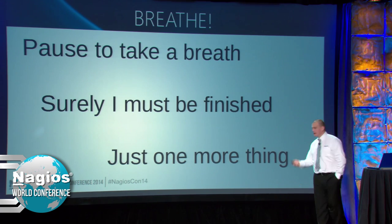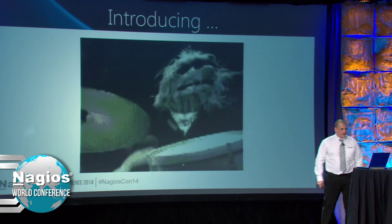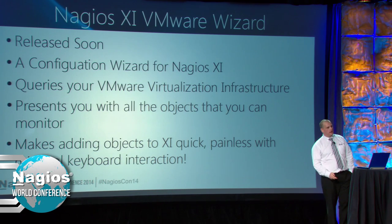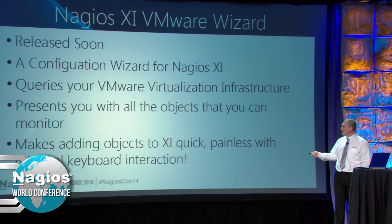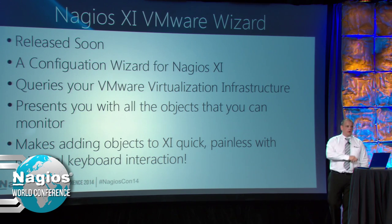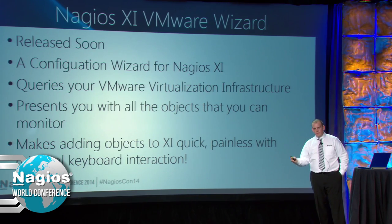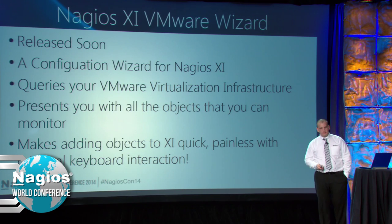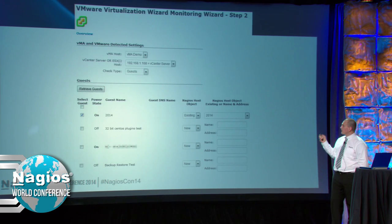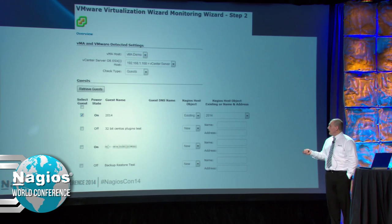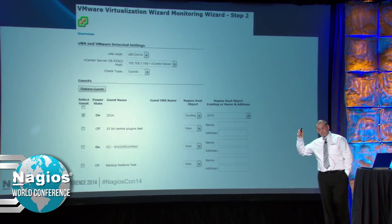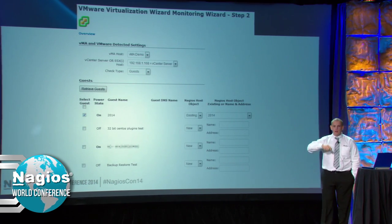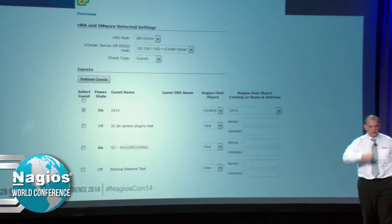I think I've covered everything but there's just one more thing - introducing a wizard for Nagios XI. Coming soon, I'm going to have a configuration wizard that will talk to your infrastructure, present all the options that we just talked about, let you click lots of boxes and tick buttons. I've created a component that defines the VMA host and vCenter servers for larger deployments.